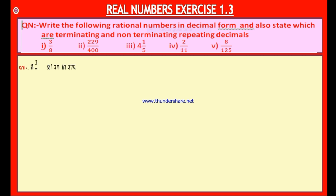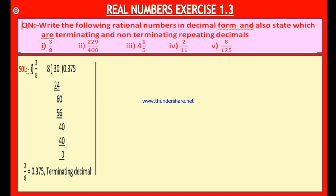Here is the solution for the first bit: 3 divided by 8. You cannot divide 3 with 8, so keep 0 point and it will be 30 now. In 38, 3 times 8 is 24, remainder is 6. Keep 0 beside 6, so it is 60. In 60, 7 times 8 is 56. Now 40: 5 times 8 is 40, remainder is 0. Therefore 3 by 8 is 0.375. If you divide 3 with 8, you get 0.375, which is a terminating decimal.